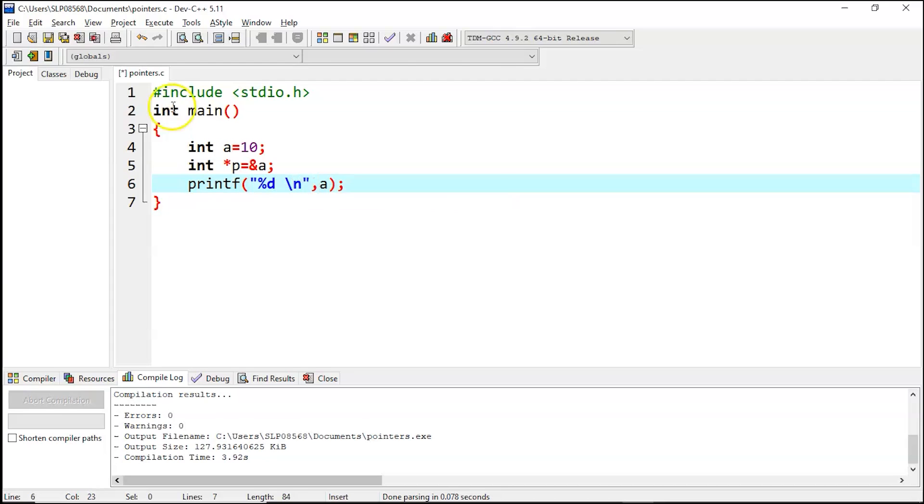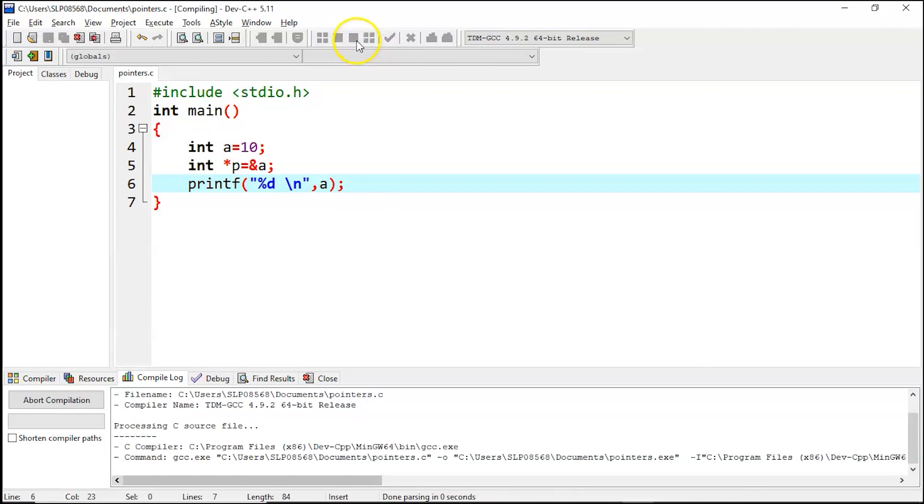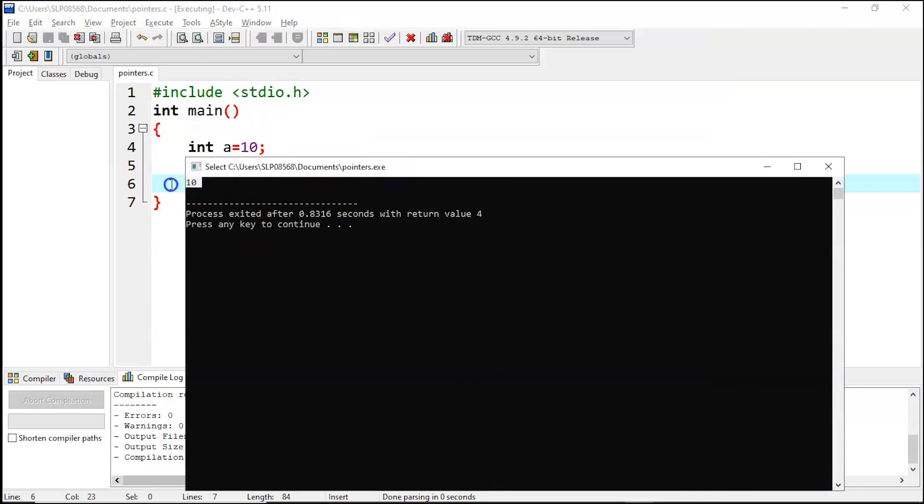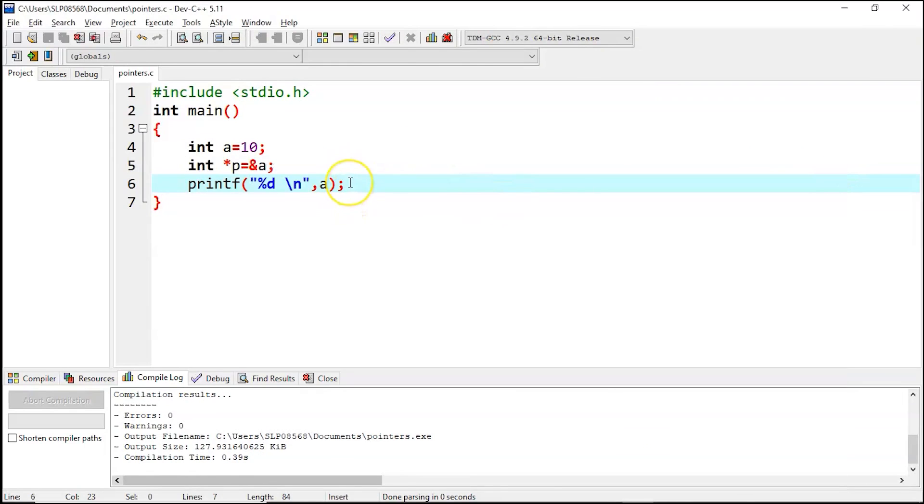And then let's print the value of a. This print statement will print the value of a, that is 10. So let's execute it. As you can see, the value 10 is printed successfully.